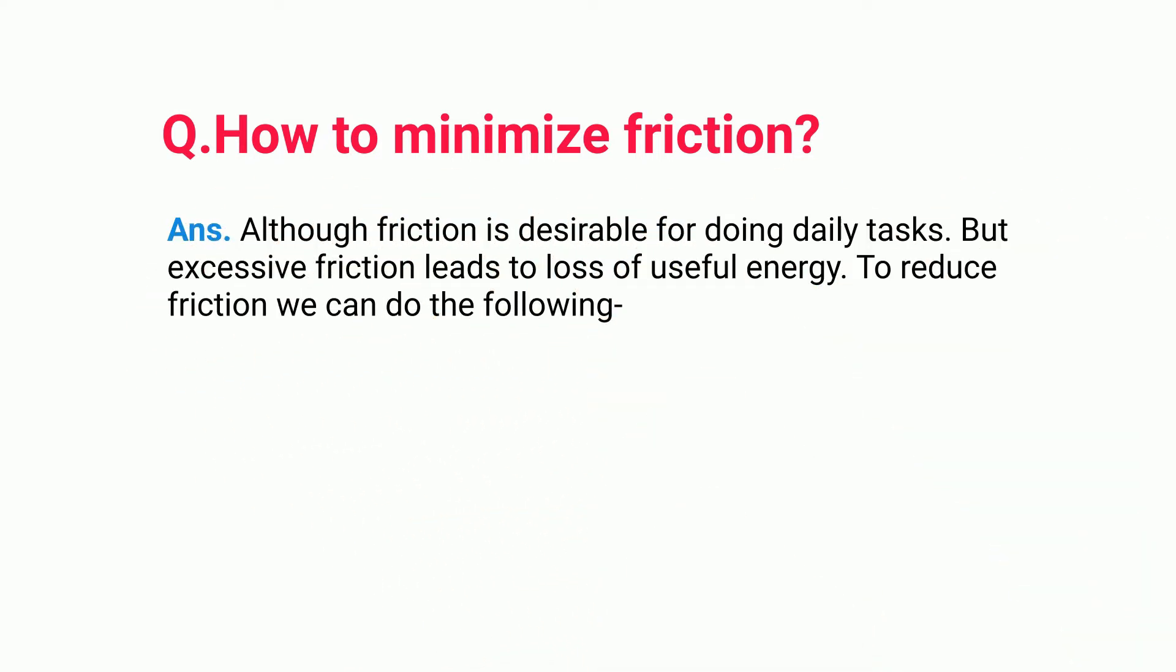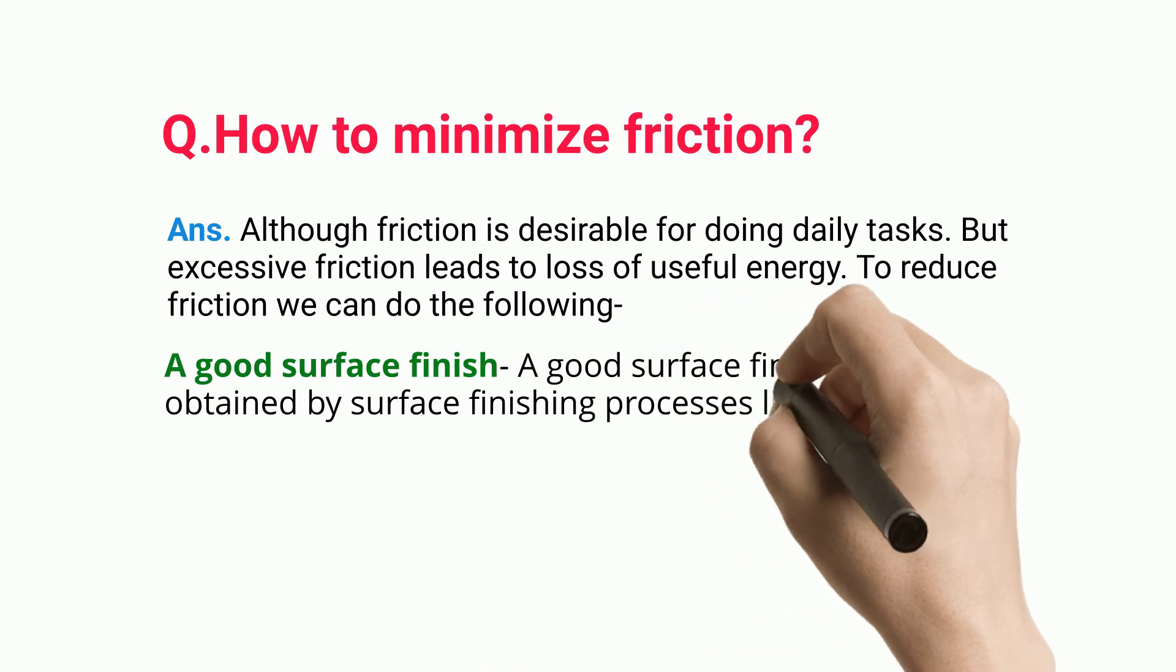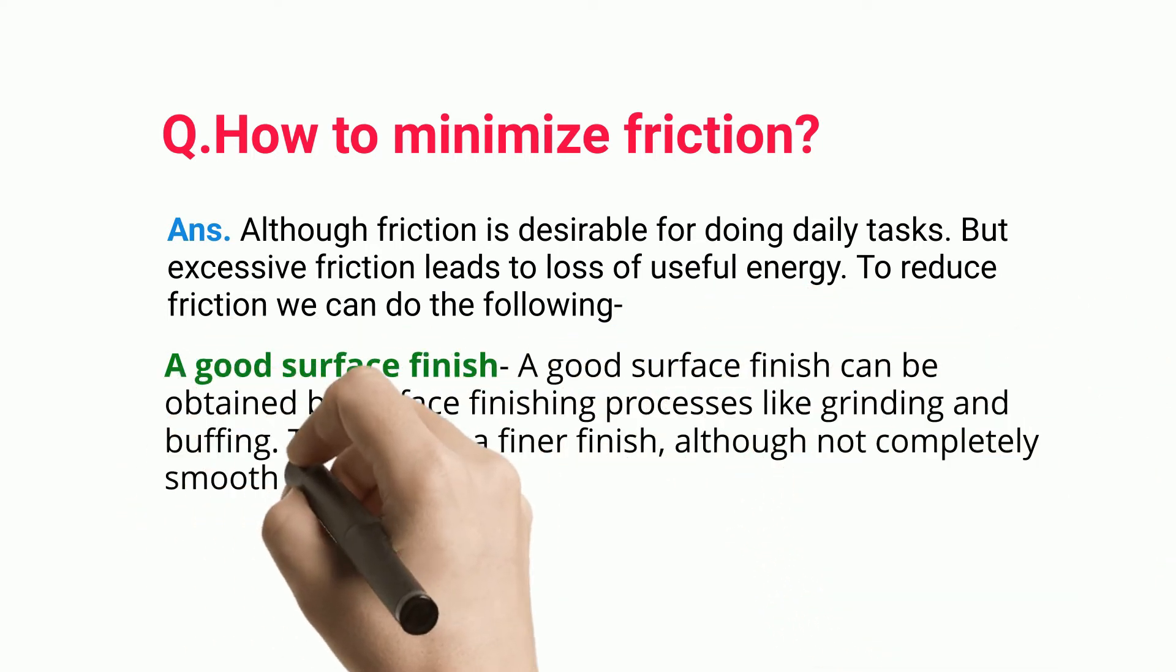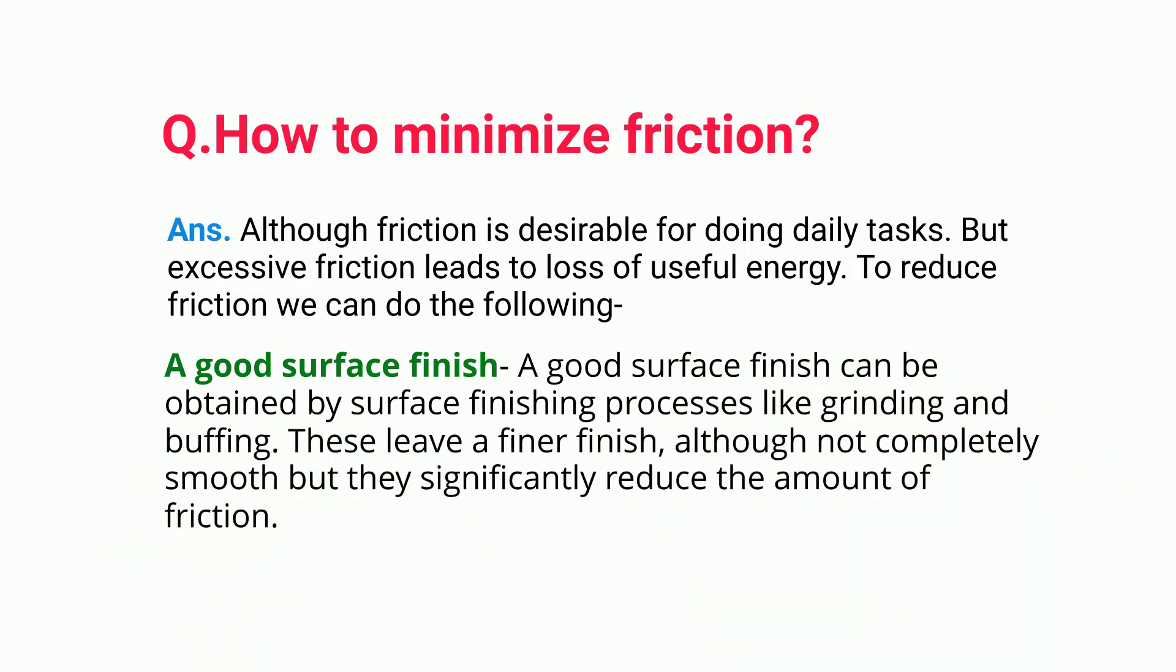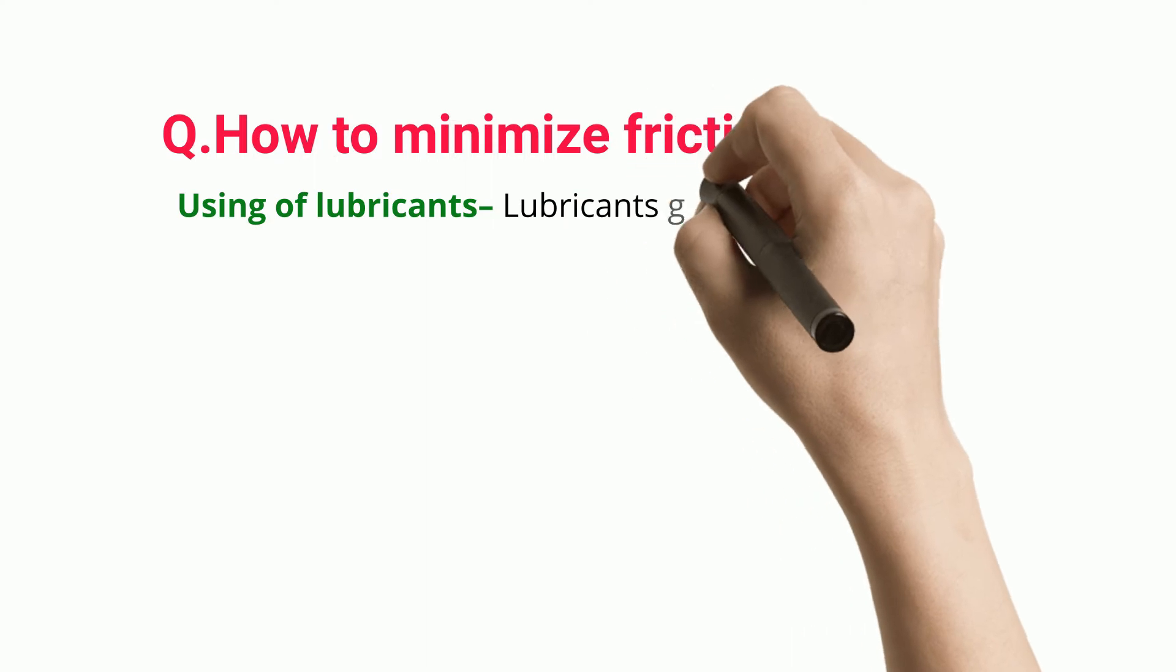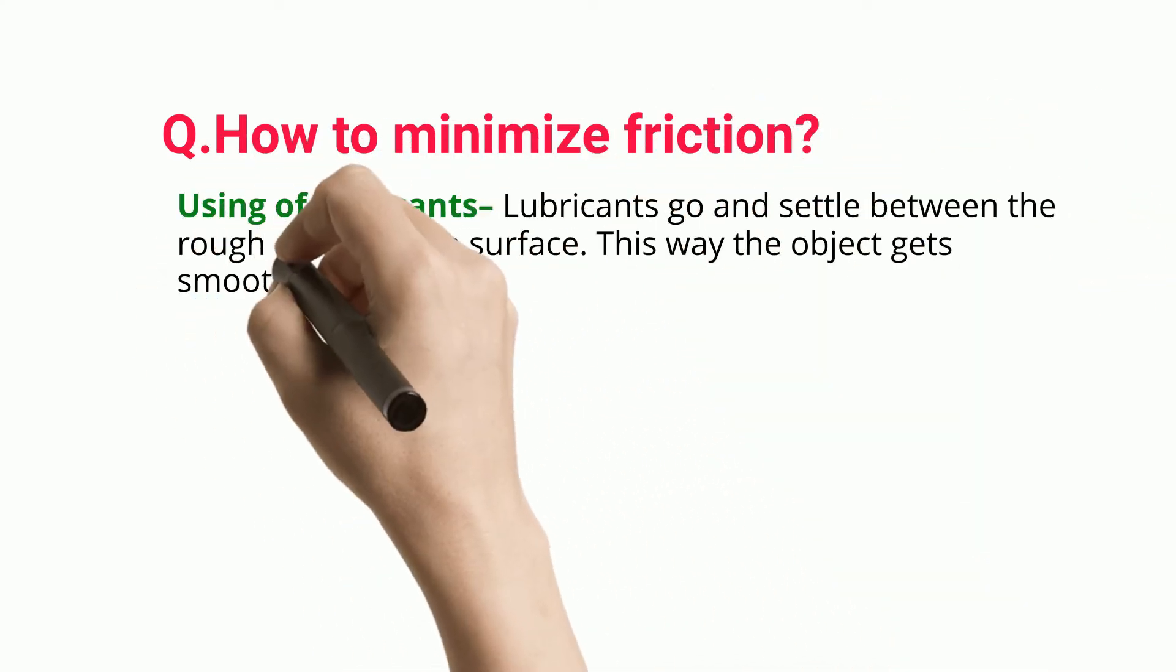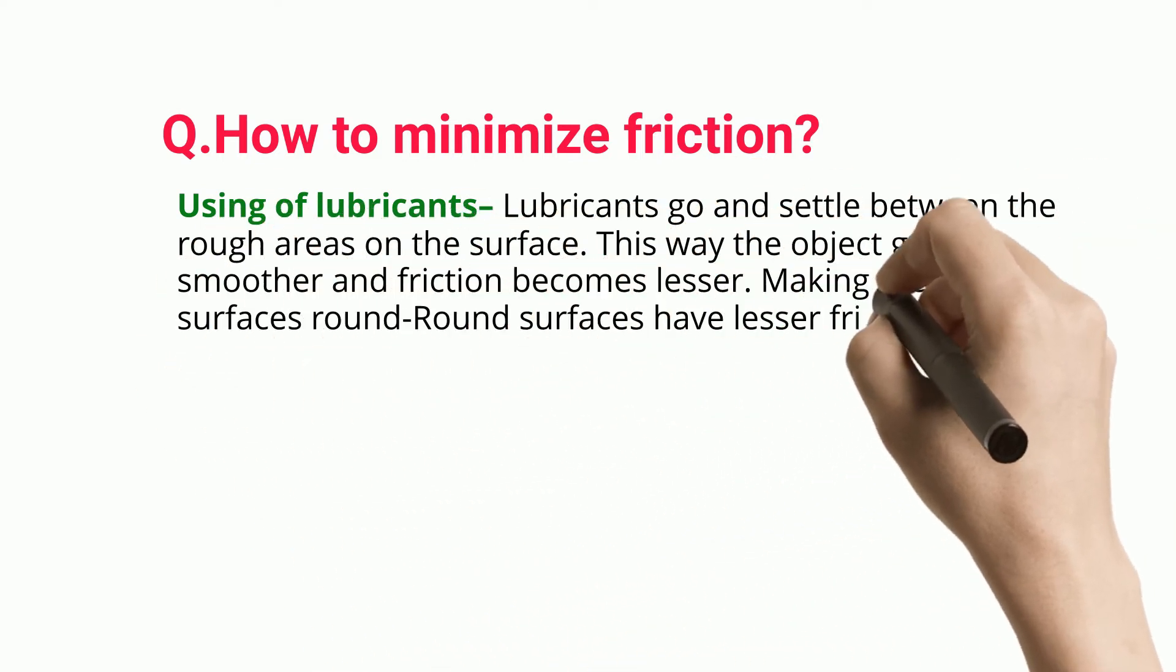To reduce friction, we can use a good surface finish, obtained by surface finishing processes like grinding and buffing. These leave a finer finish, although not completely smooth, but significantly reduce the amount of friction. Using lubricants also helps, as lubricants go and settle between the rough areas on the surface. This way the object gets smoother and friction becomes lesser.